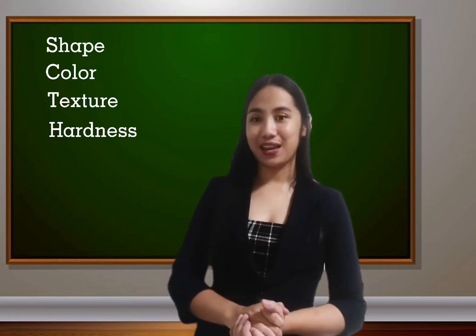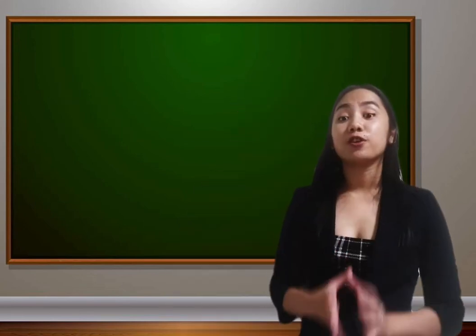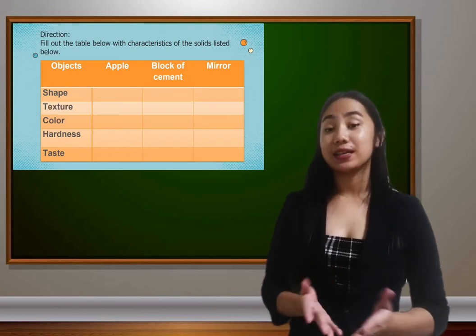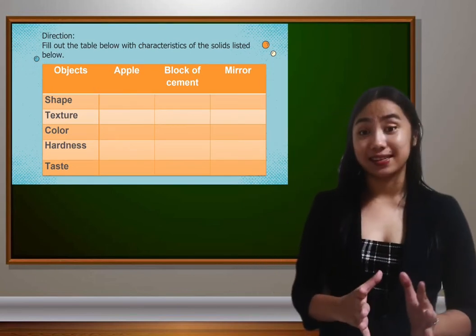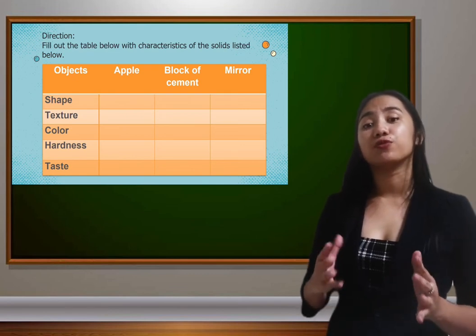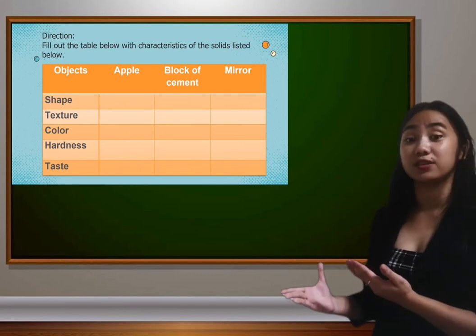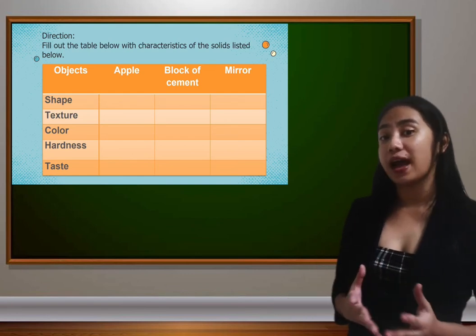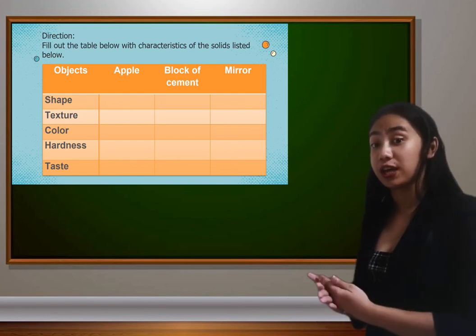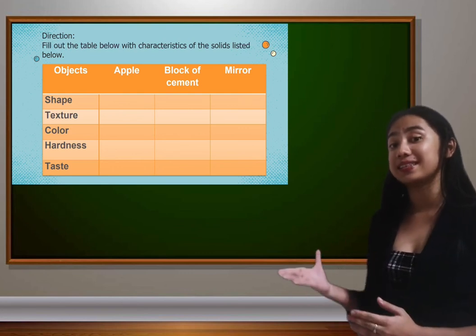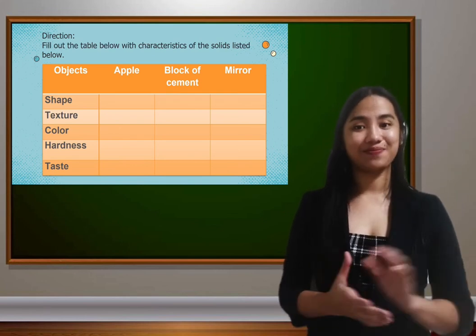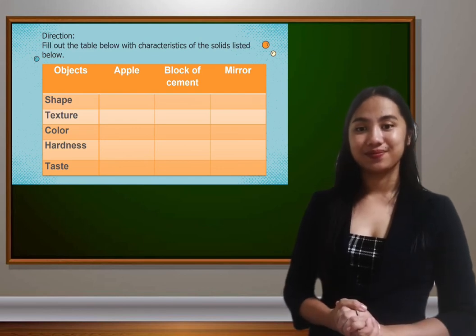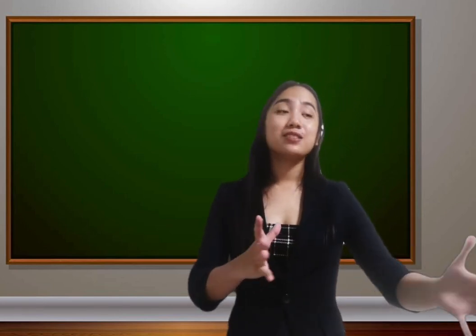And now are you ready for a new challenge? For our challenge for today, I want you to take a piece of paper and divide it into four columns. You have to fill out the characteristics of the following solids. For example, for the apple, you have to identify its shape, texture, color, hardness, and taste. If the taste is not applicable, you may simply cross it out. Are you ready? You may now start. Is everyone done? Please pass your papers to the front.